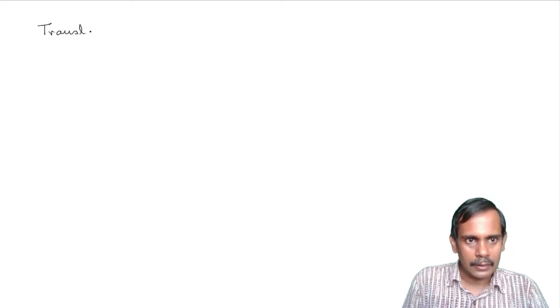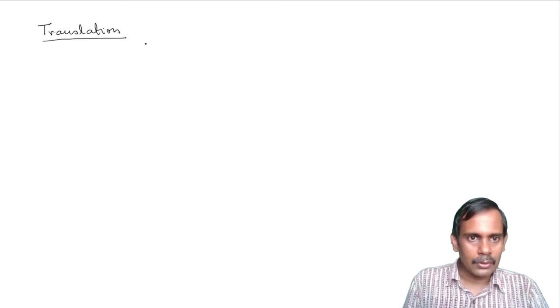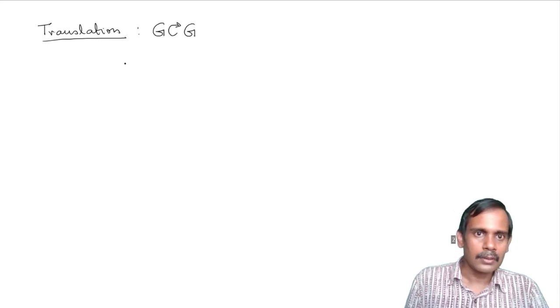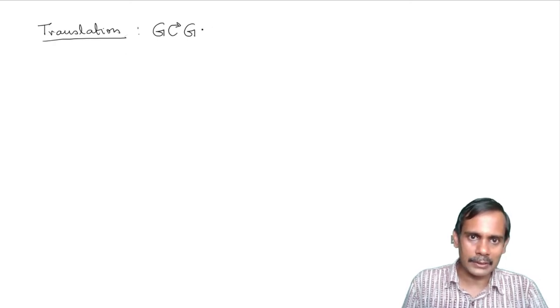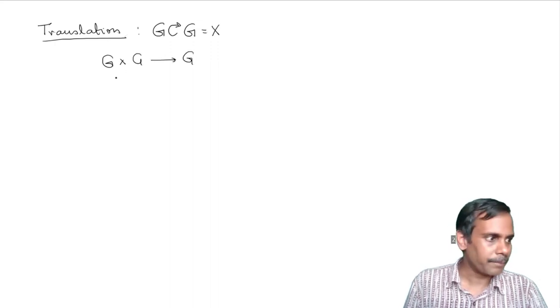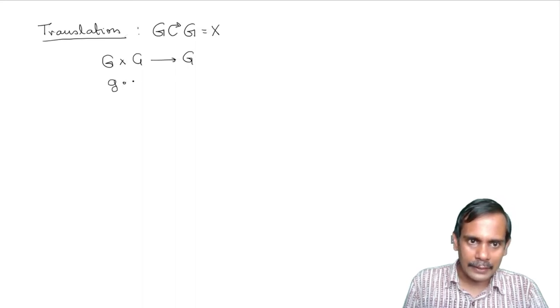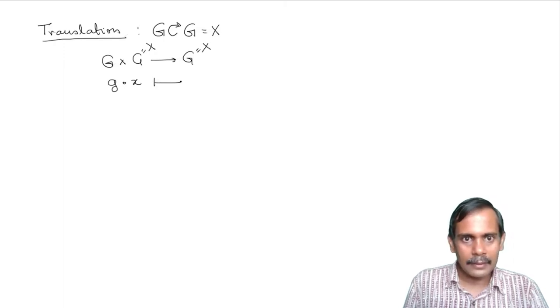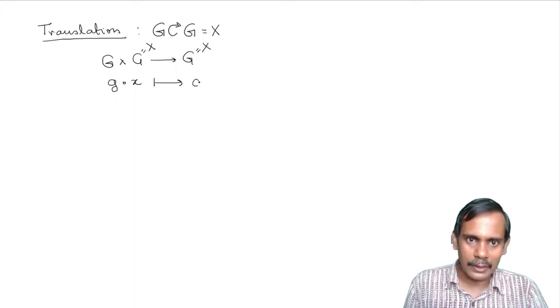The most basic example is the translation action. We take a group G and make it act on itself, so X equals G. The action becomes a function from G cross G to G, and we define G dot X to be GX — the group multiplication. This is called left translation.